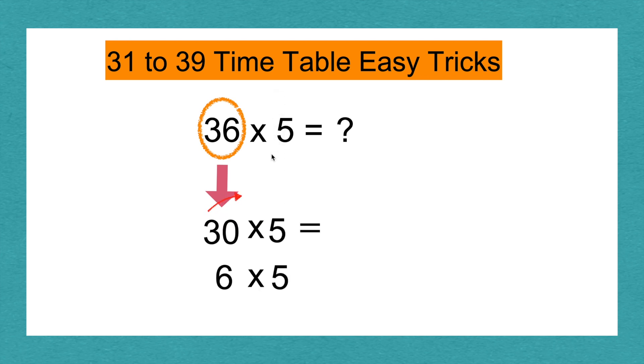3 times 5 equals 15. And then I'm going to add the 0. 30 times 5 equals 150. 6 times 5 equals 30.